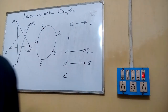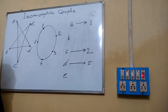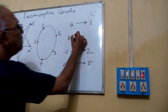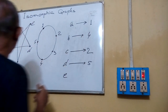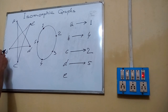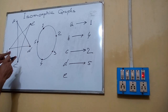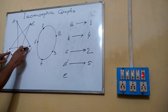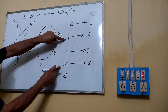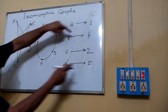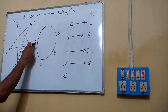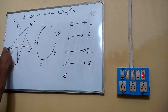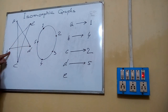Now taking vertex B, we are associating B with 4. We check edge BD — its corresponding edge should be 4-5. Checking here, edge 4-5 is present. And B is now associated with E.